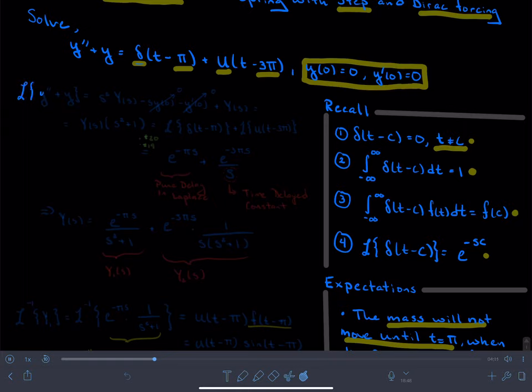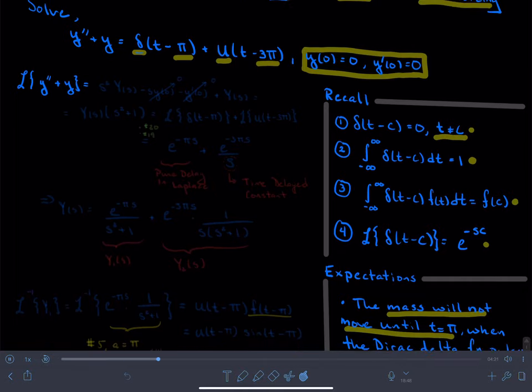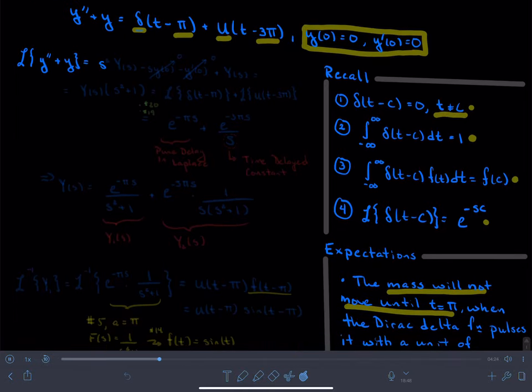So again, using Laplace transforms, I take the Laplace transform of the left-hand side, which is y double prime plus y. Using table entry number 2, I'm going to get s squared times capital Y of s minus s times y of 0 minus y prime of 0. But we know that both of these initial conditions are 0 because the system starts off in the rest configuration. And then I add to this the Laplace transform of y, which is just capital Y of s.